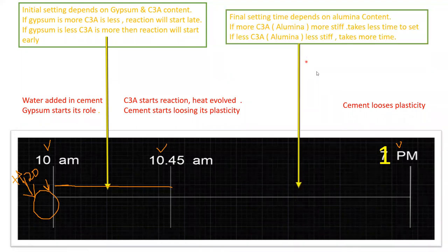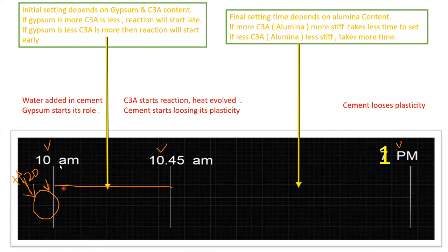The final setting time depends on the alumina content. If tricalcium aluminate content is more, the cement becomes more stiff and takes less time to set. If less alumina content is present, the stiffness will be less and it will take more time to set. The final setting time depends on tricalcium aluminate content, not on gypsum content.